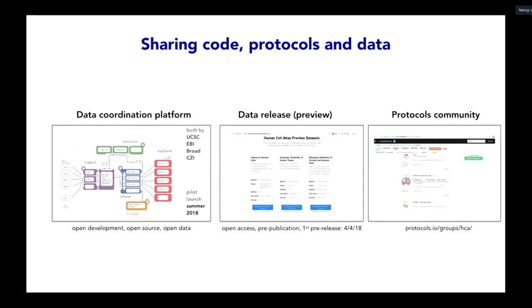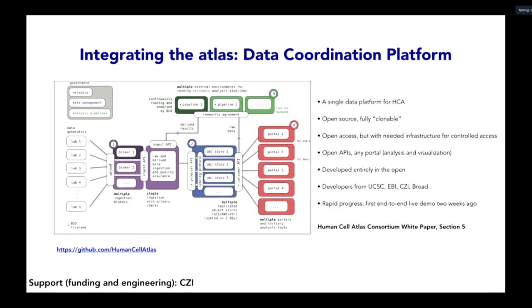One of our core values is the sharing of code, protocols, and data — being an open community where open science can be maximally impactful. This is reflected in three major efforts: the data coordination platform itself, which is open source; our data releases currently in preview mode, which to the extent allowed by ethics are open access; and our lab protocols community.